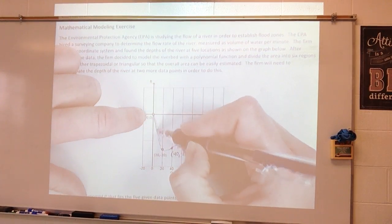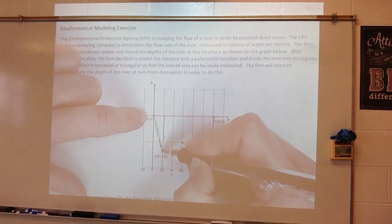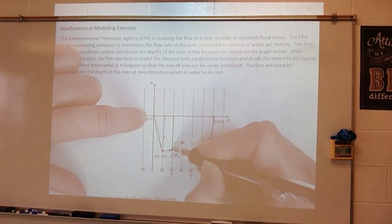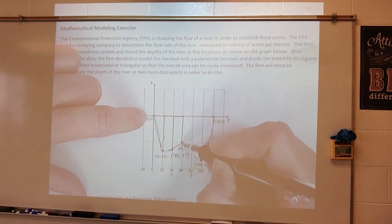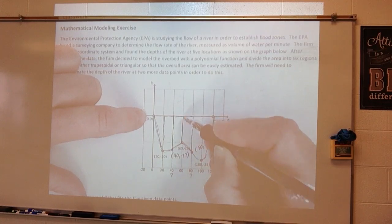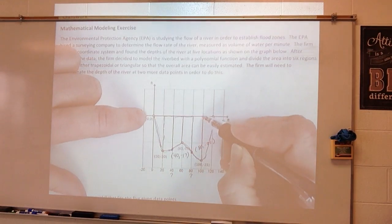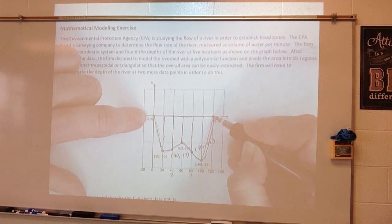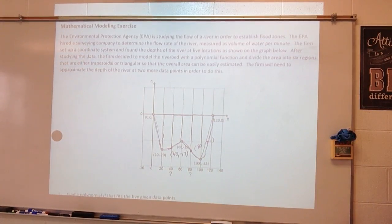So I've got a triangle here. I've got a trapezoid here. I've got a trapezoid here. Trapezoid here. Trapezoid here. And then my other triangle.